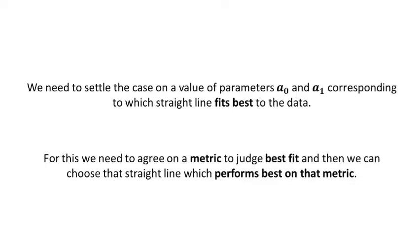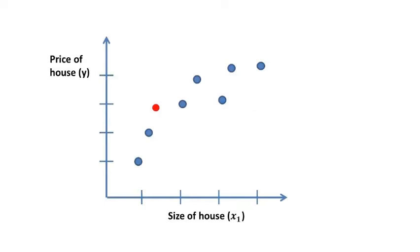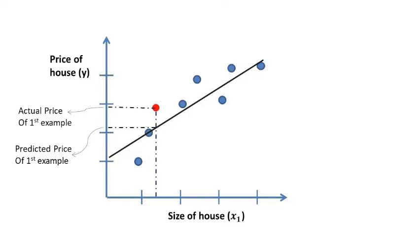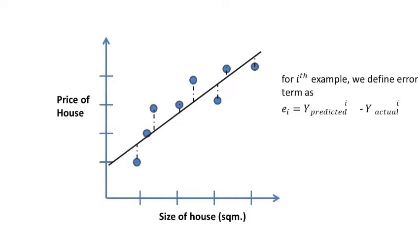Cost function to the rescue. Let's suppose we have m training examples or observations, and this is the first one. This is our model. From this we know that this is actual price of first example, and this is price of first example as predicted by model, which falls on our straight line for that size. Let's call this difference as error term e, which is like y actual minus y predicted. Since it is for first example, let's call it e1. For ith example we define error term as ei equals y predicted minus y actual. Now as you might have understood, ei can be positive or negative depending on whether y actual is more or y predicted.